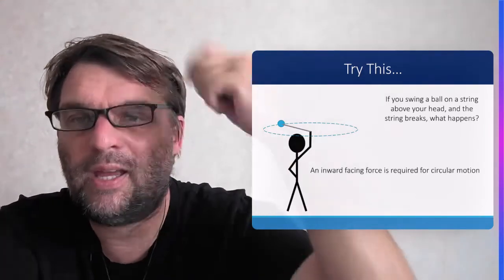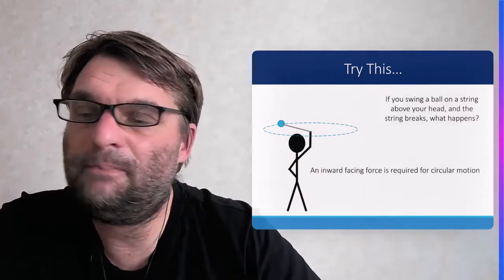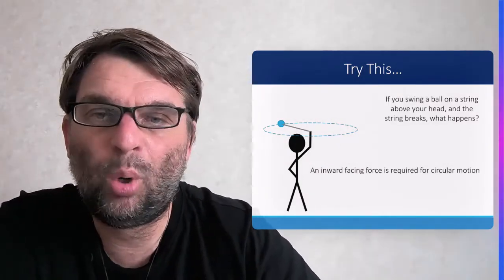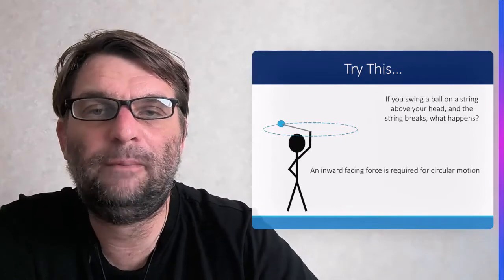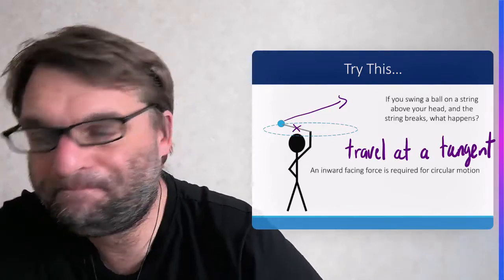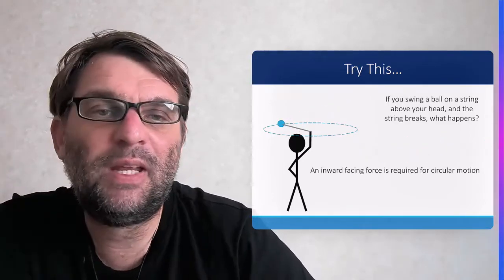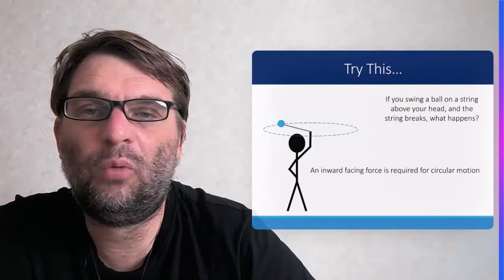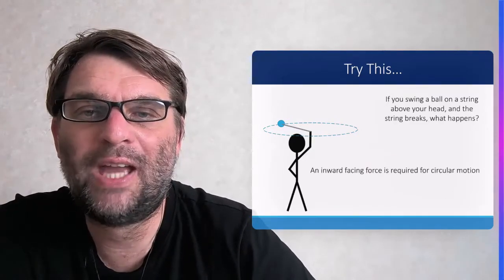If you're swinging a lasso and the string breaks, what happens? The ball will travel in a tangent. This means there has to be an inward force required for circular motion to occur.